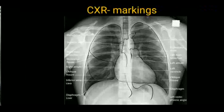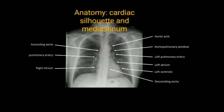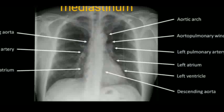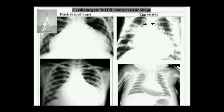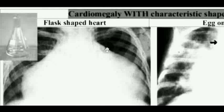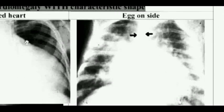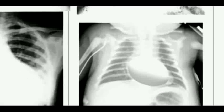We can actually appreciate right ventricular enlargement better in the lateral view of the X-ray. Now this is cardiomegaly — cardiomegaly is the enlargement of all the chambers of the heart, hypertrophy of the heart. It can be in the shape of a flask, or it can be in the shape of an egg — egg-on-side appearance — a flask-shaped heart.